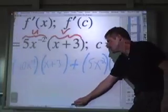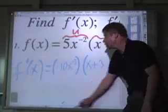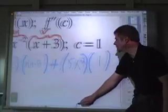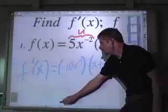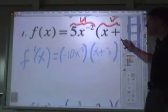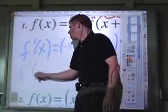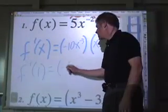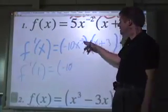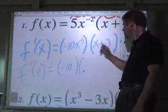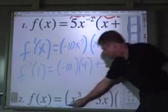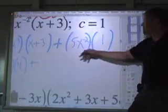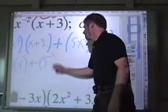Derivative of the first times the second plus first times the derivative of the second. Let's not take time in class to simplify that or whatever. I mean, I know you know algebra. The second part of the direction is to find f prime of c. And in this case, c is equal to one. So to complete part two of the problem, you would have to find f prime of one. The slope of the tangent line when x equals one would be negative ten times one to the negative three, which is one, times one plus three, which is four, plus, now plug one in for these x's, you get five times, that's going to be five, times one.